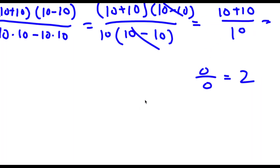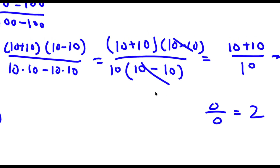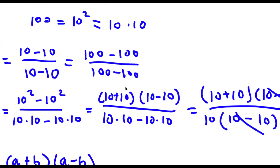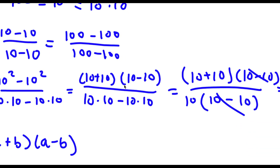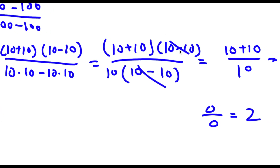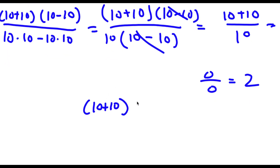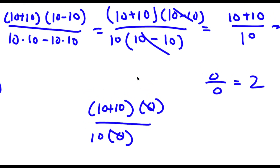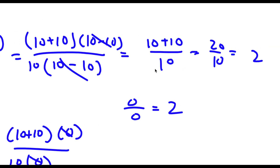Now I'm going to let you guys pause the video and look back and find out where I made my mistake. Alright, so the mistake was made right here when I canceled out both (10 minus 10)s. 10 minus 10 is actually equal to 0, so this means that I have (10 + 10) times 0 over 10 times 0, and you can't actually divide 0 by 0 because 0 divided by 0 is undefined. So I can't cancel these two out — that's where I made my mistake. You can't divide 0 by 0.